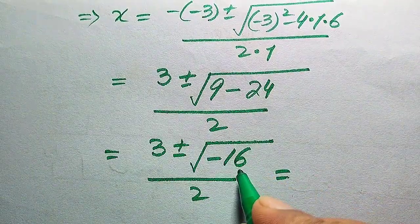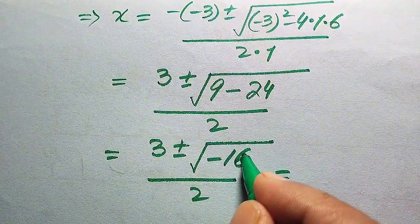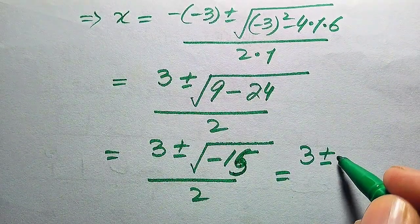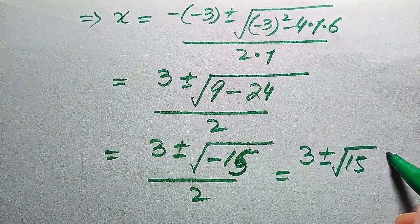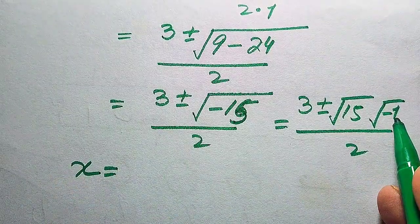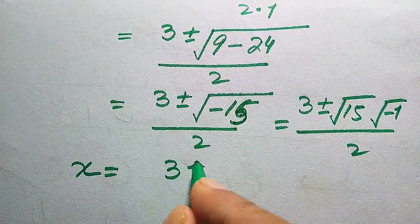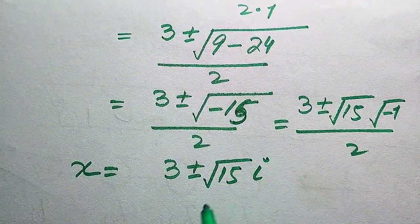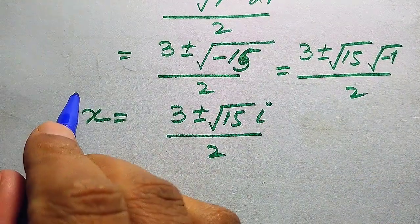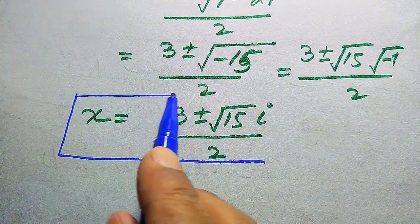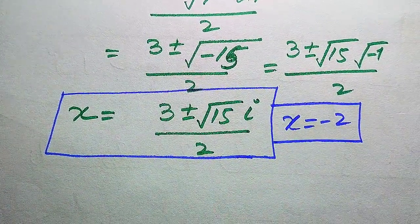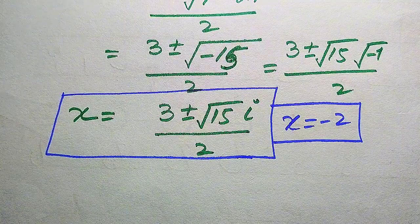We apply the square root separately to both factors: square root of 15 times square root of minus 1. Since the square root of minus 1 is the imaginary unit iota (i), the two complex roots are x equals (3 plus or minus i√15) divided by 2. Since our original equation is cubic, it has three roots total: two complex roots and one real root, x equals minus 2.